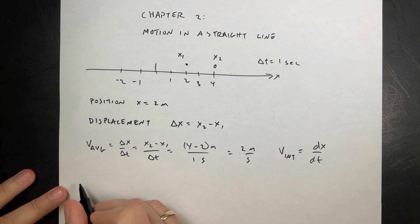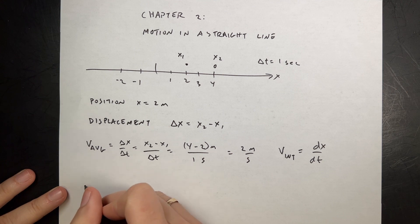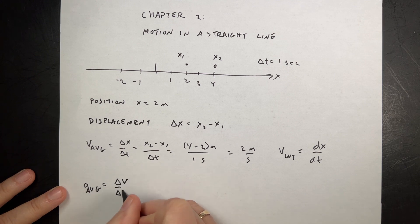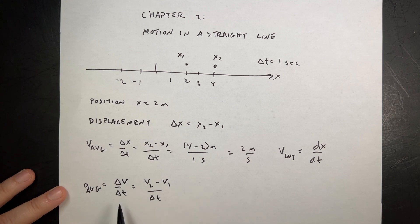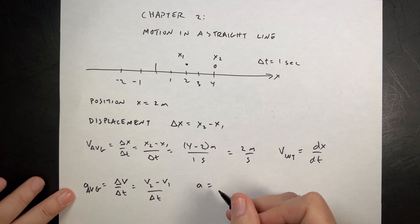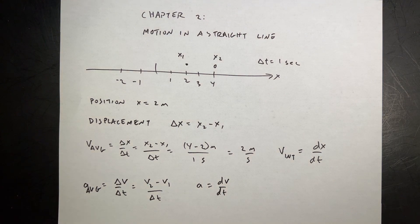Then let's get to changes in velocity. Here we define the average acceleration. It's going to be the rate of change of velocity, so that's v2 minus v1 over delta t. And again, if I let the limit delta t go to zero, I get the instantaneous acceleration, which is the derivative dv/dt, the derivative of velocity with respect to time.